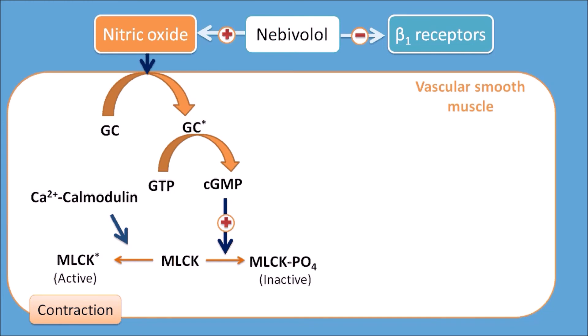But here, the release of cyclic GMP causes the formation of inactive MLCK phosphate, resulting in the relaxation of the vascular smooth muscle. In this way, nitric oxide inhibits contraction, thereby producing relaxation in the vascular smooth muscle.